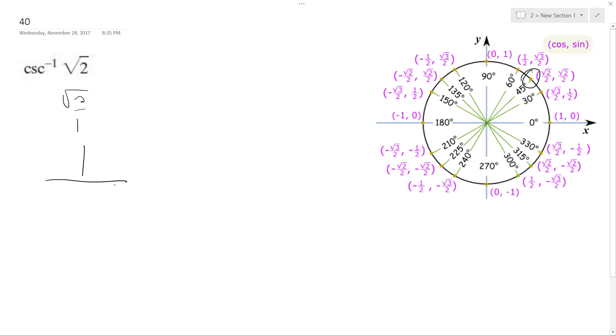So that would be the same thing as one over the sine of pi over four, which is equal to one over square root of two over two, which is equal to two over the square root of two.